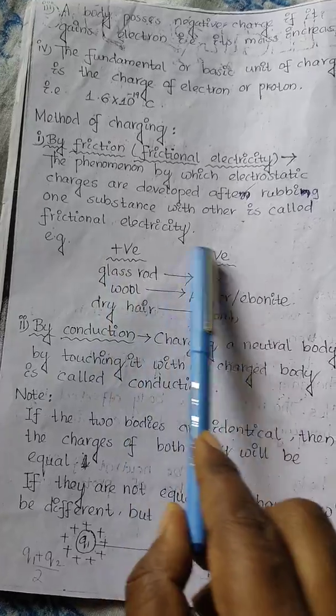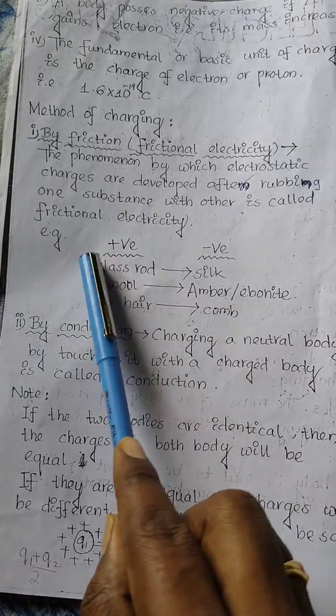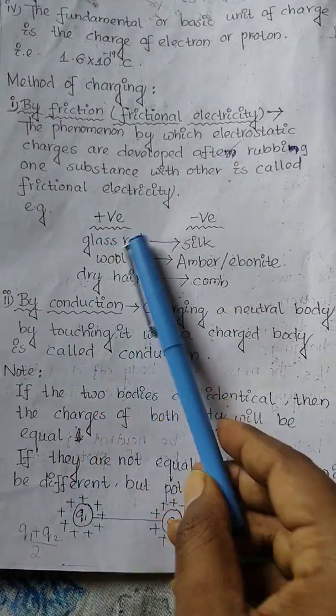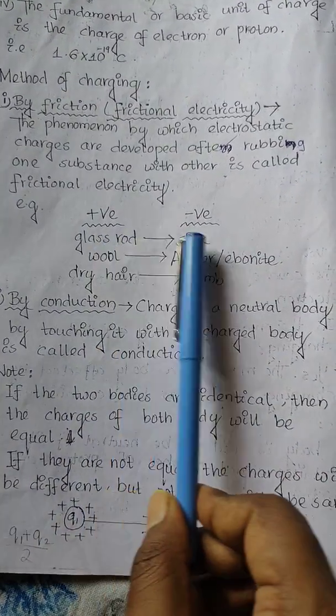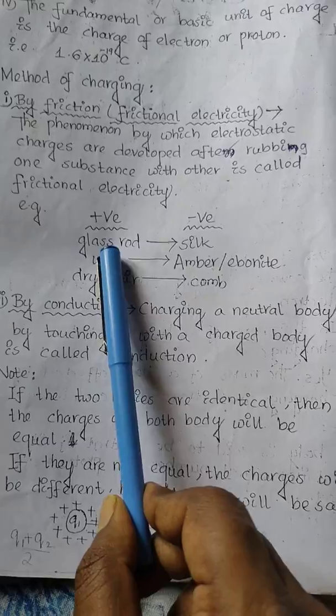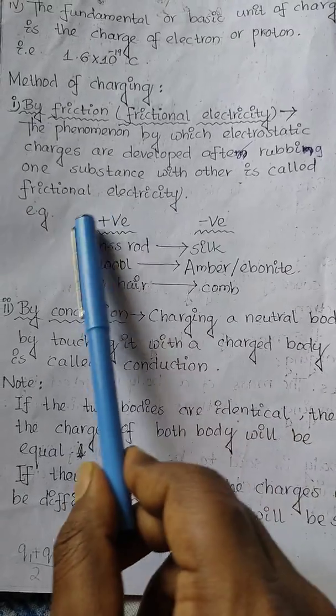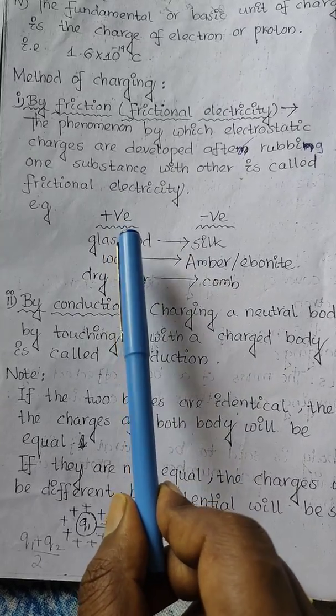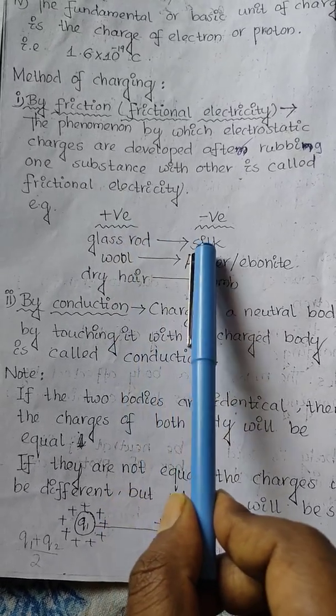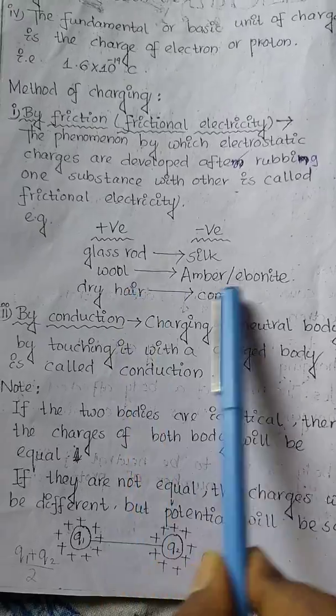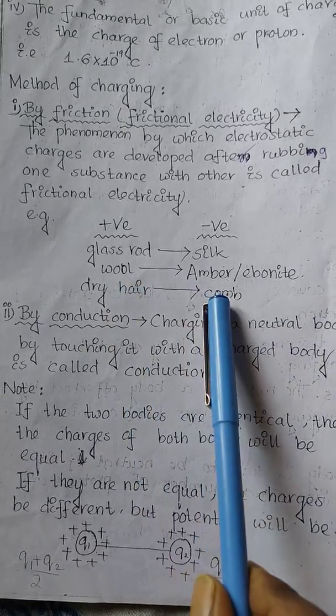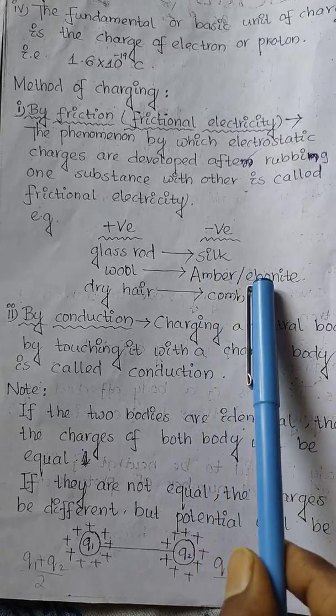The traditional method was first demonstrated by scientist William Gilbert by rubbing glass with silk. Glass becomes positively charged and silk becomes negatively charged. Glass loses electrons and silk gains electrons. For example, electron loss gives positive charge, electron gain gives negative charge.